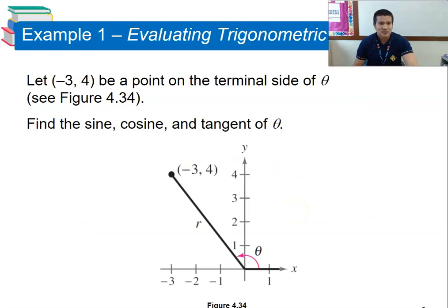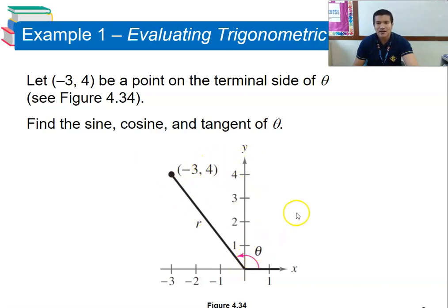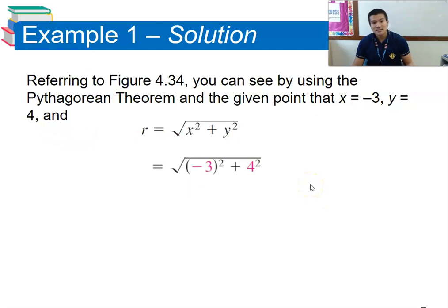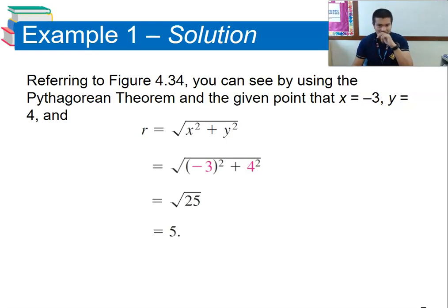Let's evaluate trigonometric functions. Find sine, cosine, and tangent given the point (−3, 4), where x = −3 and y = 4. We need to find r using the Pythagorean theorem: r = √(x² + y²) = √((−3)² + 4²) = √(9 + 16) = √25, which equals 5. So our value of r is 5.